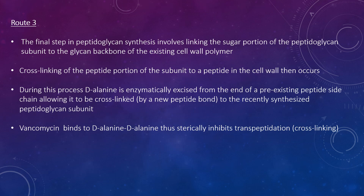The final step in peptidoglycan synthesis involves linking the sugar portion of the peptidoglycan subunit to the glycan backbone of the existing cell wall polymer. Cross-linking of the peptide portion then occurs. During this process, D-alanine is enzymatically excised from the end of a pre-existing peptide side chain, allowing cross-linking by a new peptide bond to the recently synthesized peptidoglycan subunit. For example, vancomycin binds the D-alanine D-alanine terminus, sterically inhibiting transpeptidation.